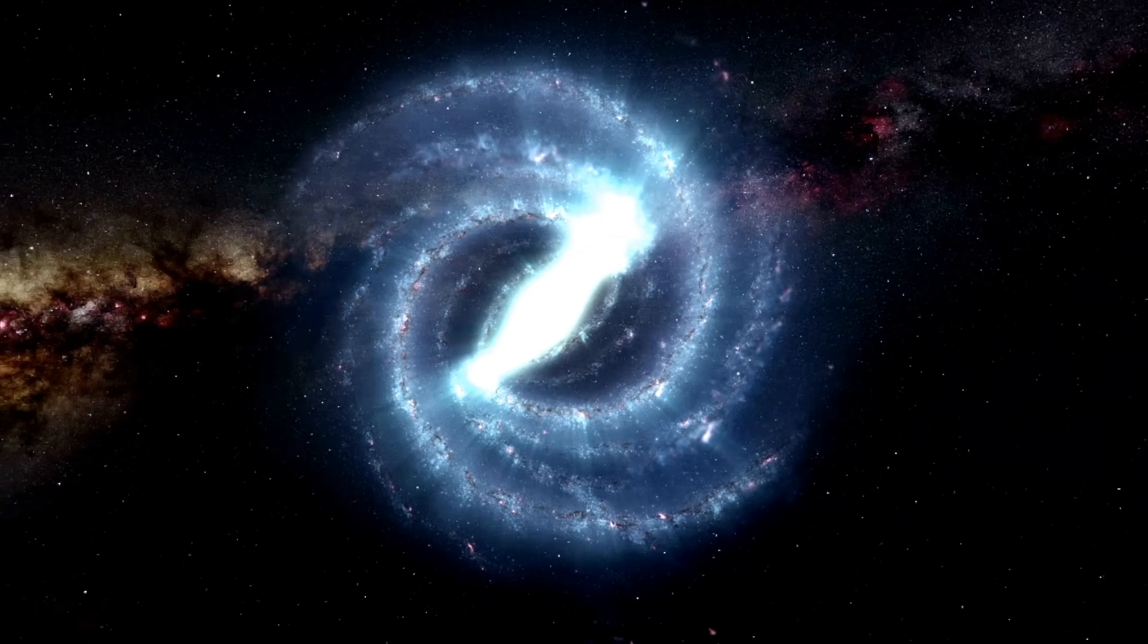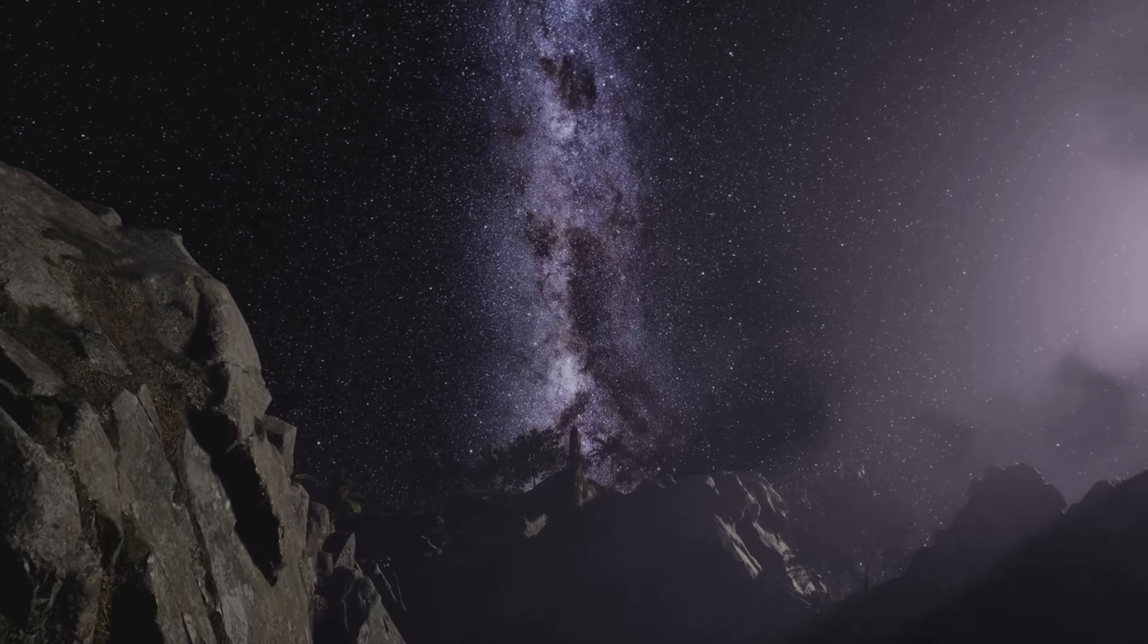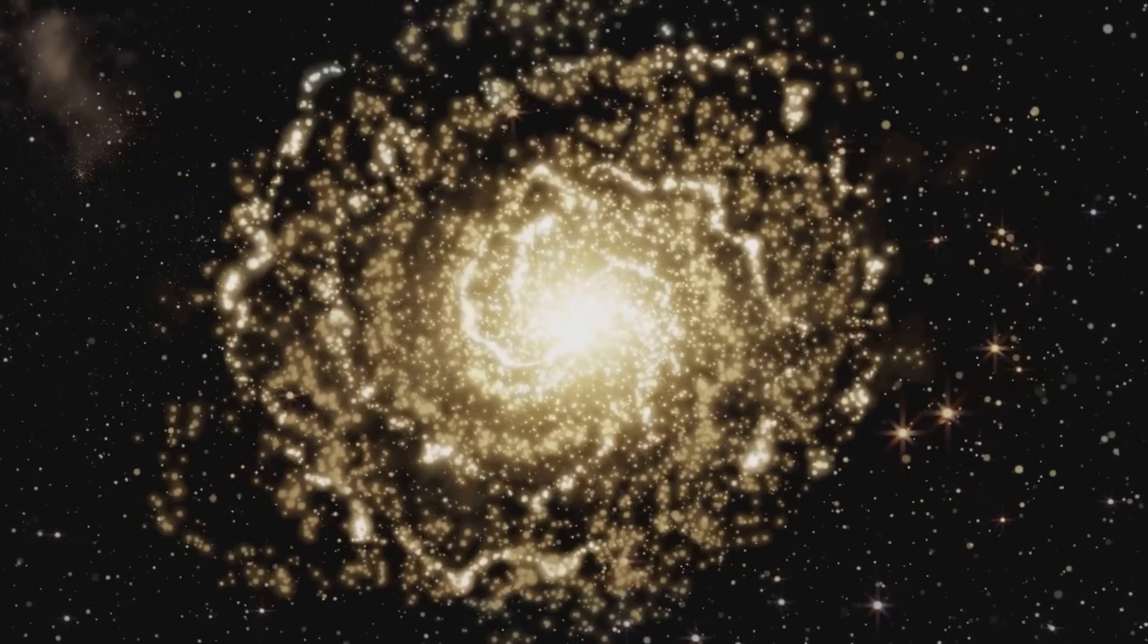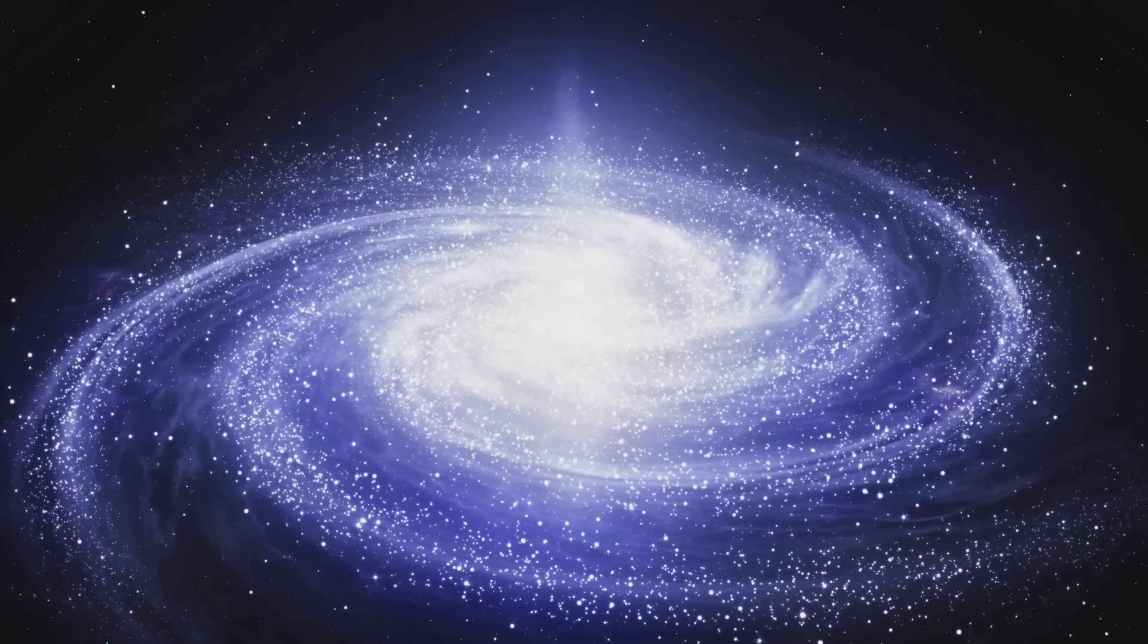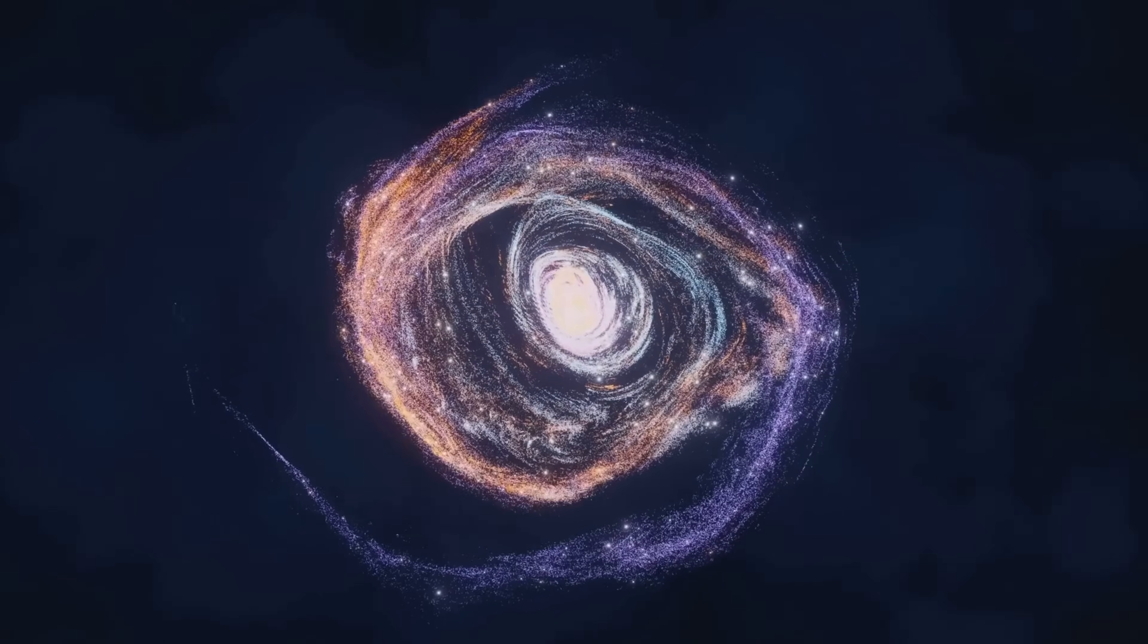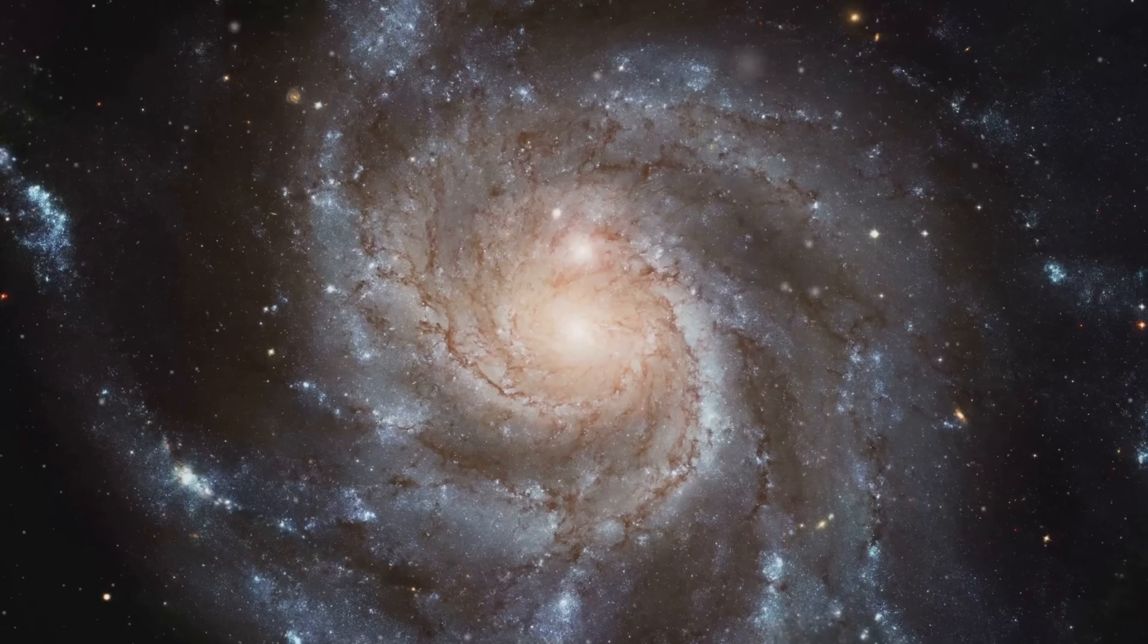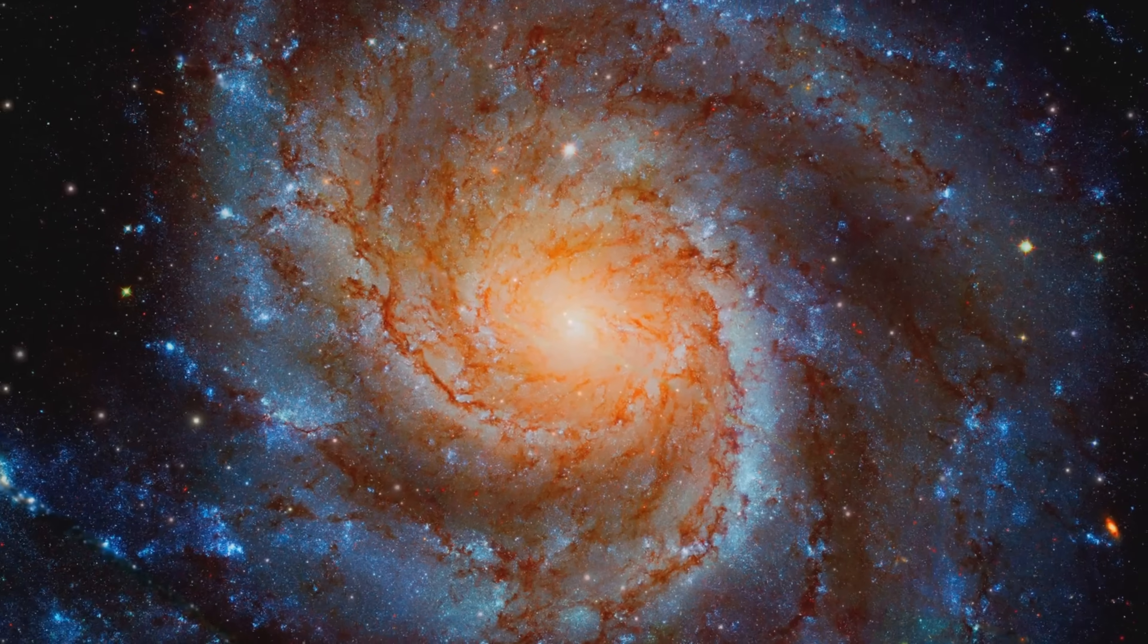Spiral galaxies are the most common type of galaxy in the universe. Our own galaxy, the Milky Way, is a spiral galaxy. Spiral galaxies have a central bulge of stars and a flat disk of stars, gas, and dust. The spiral arms are regions of active star formation. New stars are born in these arms, making them shine brightly. Spiral galaxies can have two or more spiral arms. Some spiral galaxies have a bar-shaped structure in their center. These are called barred spiral galaxies.